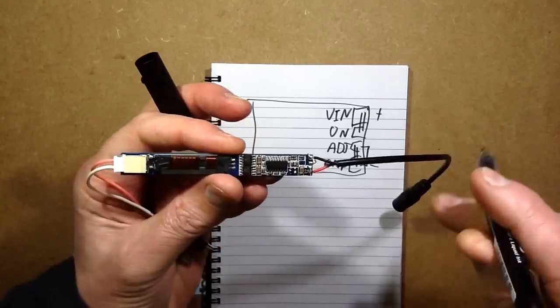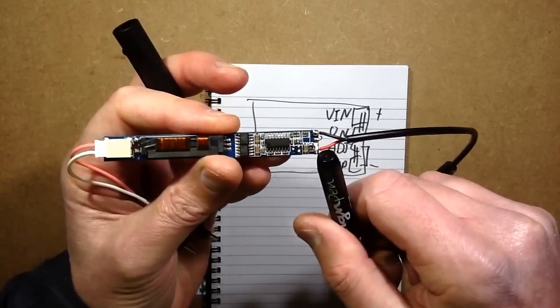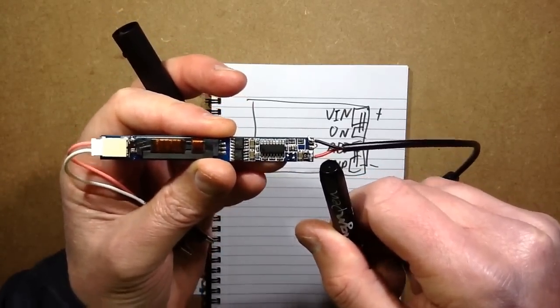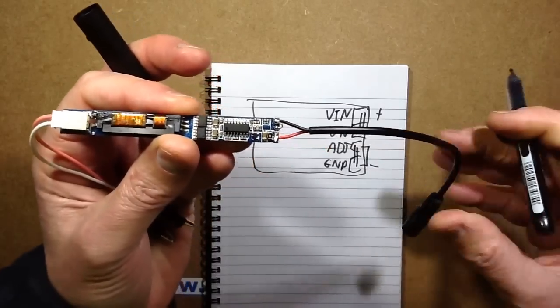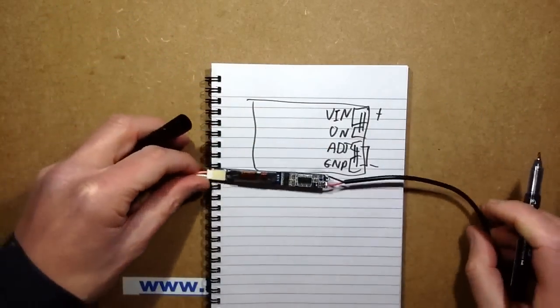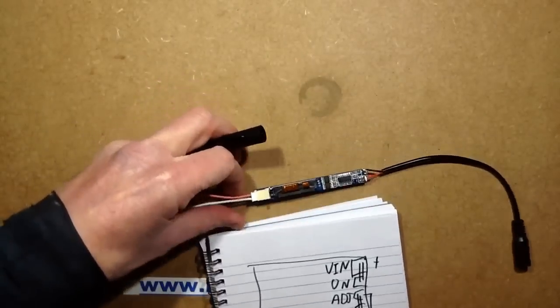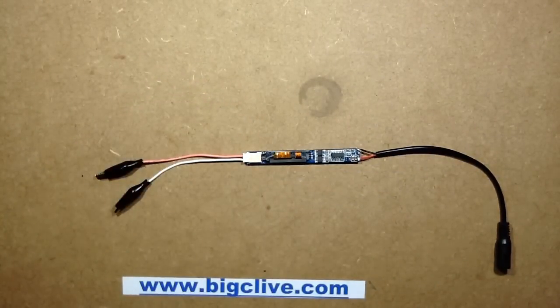So that's what I've done here. I've basically got the two connections there bridged to positive, and the two connections there bridged to negative, and I've just put a little jack connector onto it. So let's plug this in and put a neon tube in it to see just what it can drive.